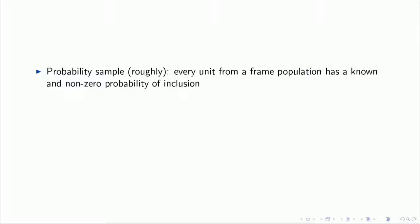A probability sample, roughly, is one where every unit in the frame population has a known and nonzero probability of inclusion. The known probability is very important for weighting, and nonzero probability is also critical. For example, if people who are incredibly distrustful of the government never answer their telephones, those people have a zero probability of inclusion, and they potentially have different attitudes than people who have a positive probability of inclusion.